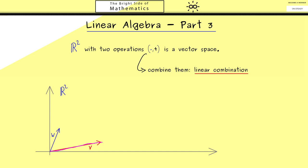For example, we can use the scalar multiplication and scale the vector v by 2. Hence the resulting vector here is 2 times v.